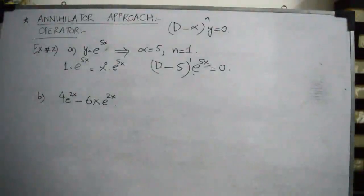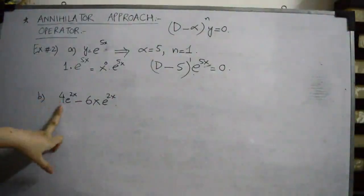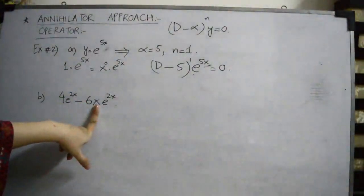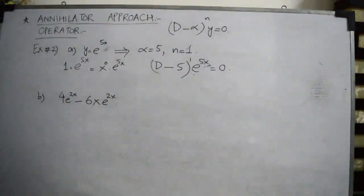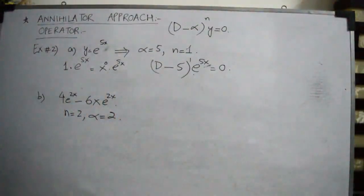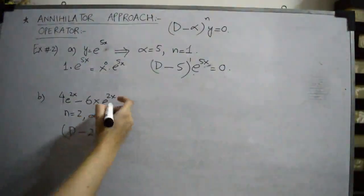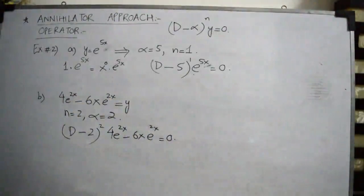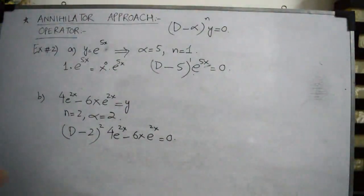Now the second part: 4e^(2x) minus 6x·e^(2x). Remember, we are only concerned with the highest power of x. Here x has the highest power 1, and adding 1 gives n equals 2. Also, alpha equals 2. So the annihilator operator becomes (D minus 2)^2 applied to y, where y is 4e^(2x) minus 6x·e^(2x), equals zero.